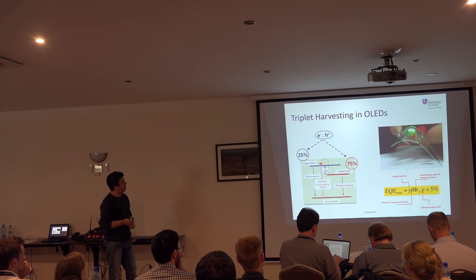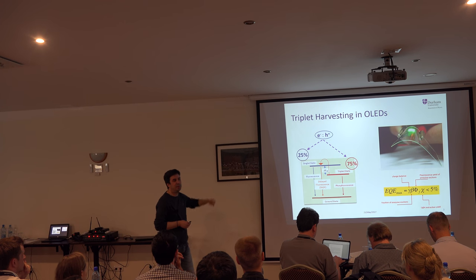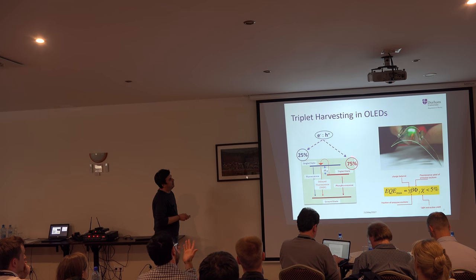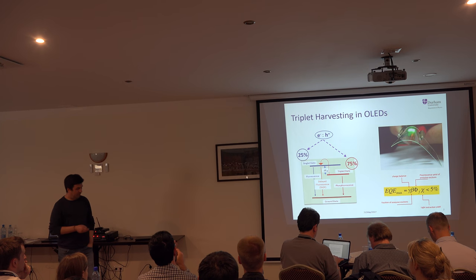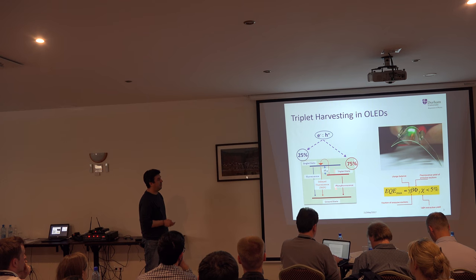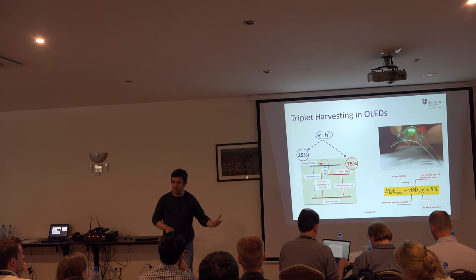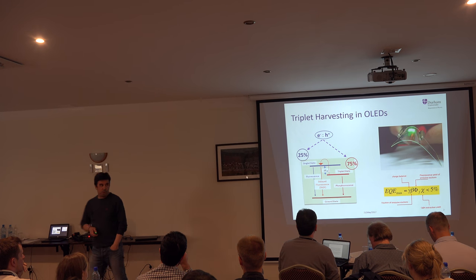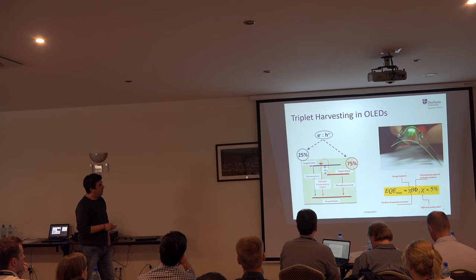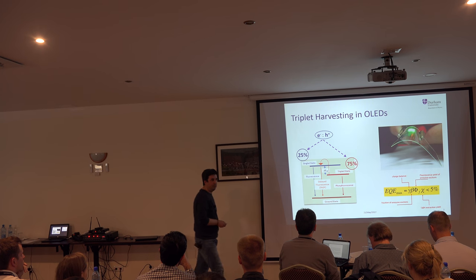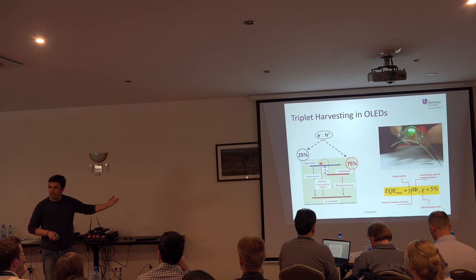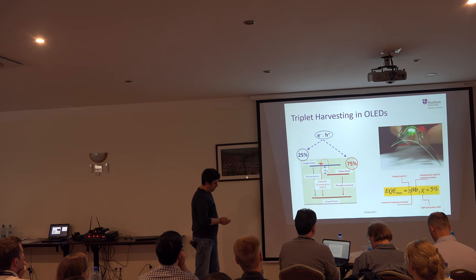Everybody here knows this. In our labs we form 25% singlet states and 75% triplet states, and the goal is to find ways to harvest these otherwise dark states. We can do this in two ways: we can use the phosphorescence channel, which most people do efficiently with metals, promoting inter-system crossing between the triplet state and the ground state; or we can up-convert triplets to the singlet state, which then decays radiatively. But there is always a competition between the up-conversion and the decay to the ground state.